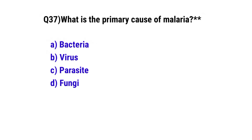Question number 37. What is the primary cause of malaria? The correct option is C. Parasite.